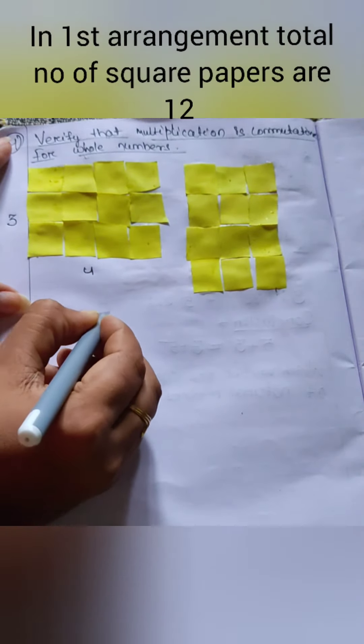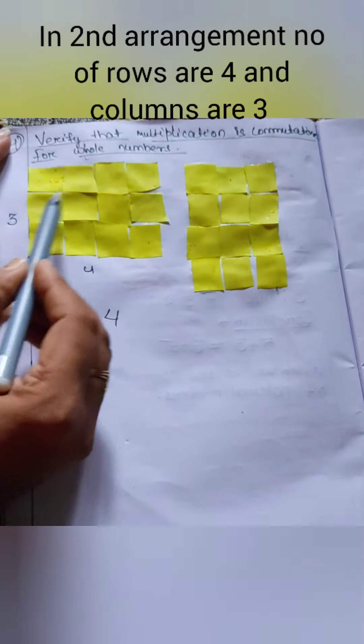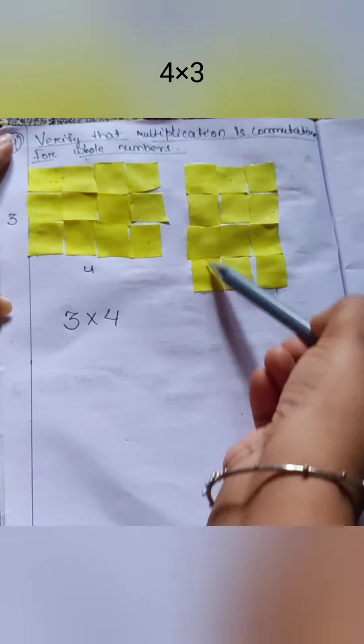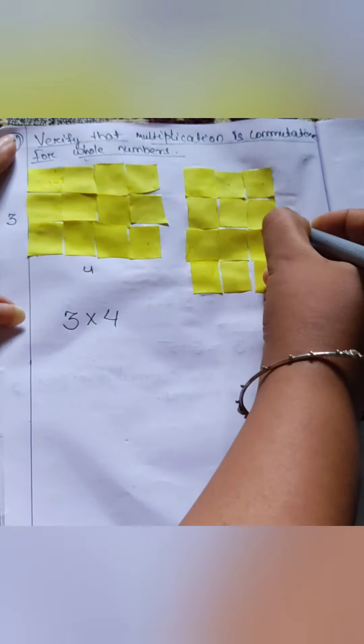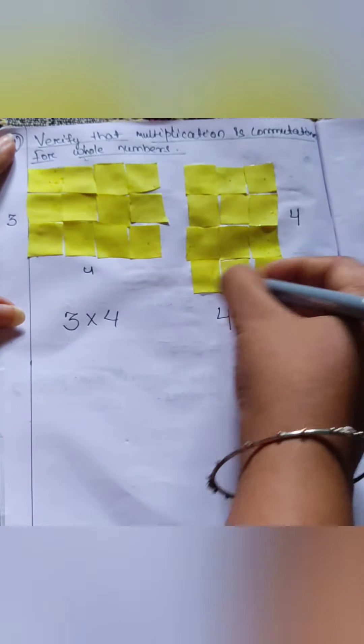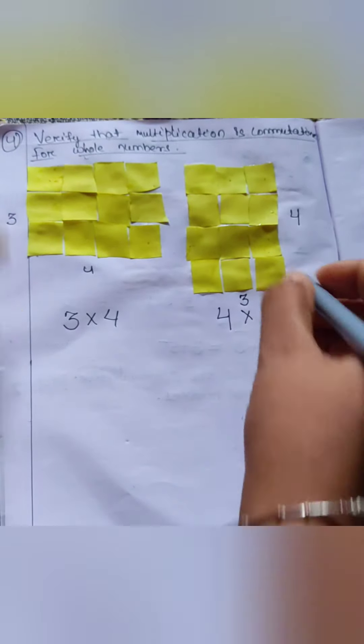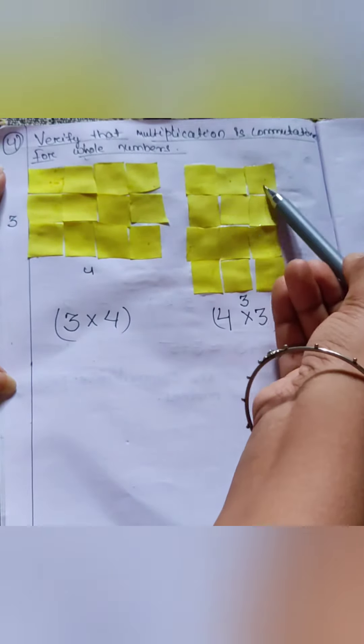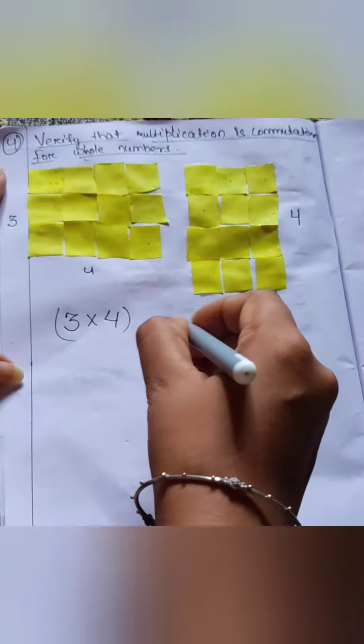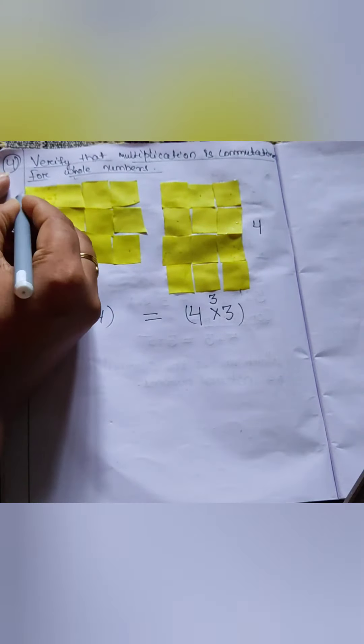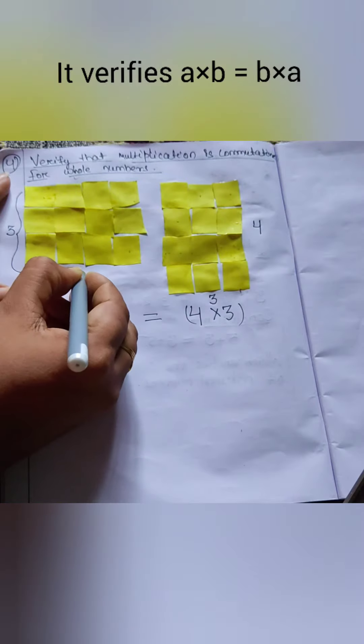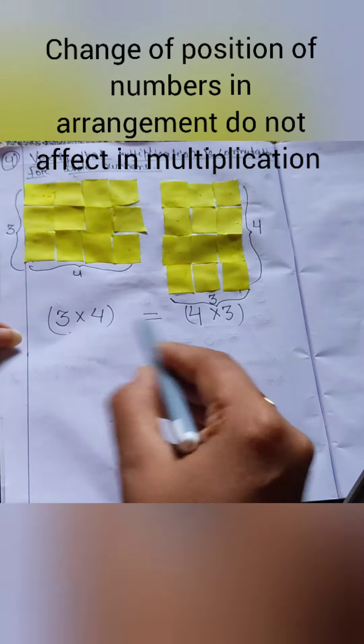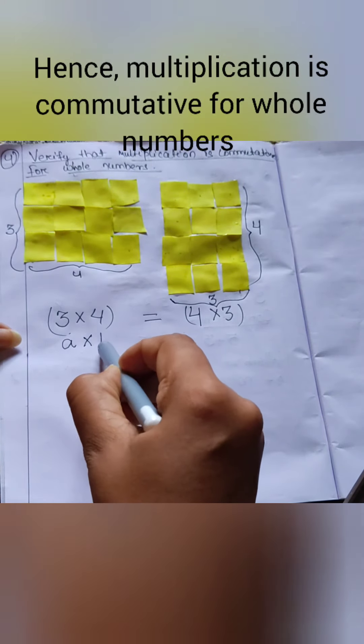So here we can see that if you need to find out the number of squares, then just multiply the row into column. We will get 3 × 4, and in the second part we will get four rows into three columns, that is 4 × 3. By counting, you can get the same number of squares in both sides: 3 × 4 equals 12, and 4 × 3 also equals 12, which verifies a × b equals b × a. It means change of position of numbers in the arrangement will never affect the product. Hence, multiplication is commutative for both whole numbers as well as natural numbers.